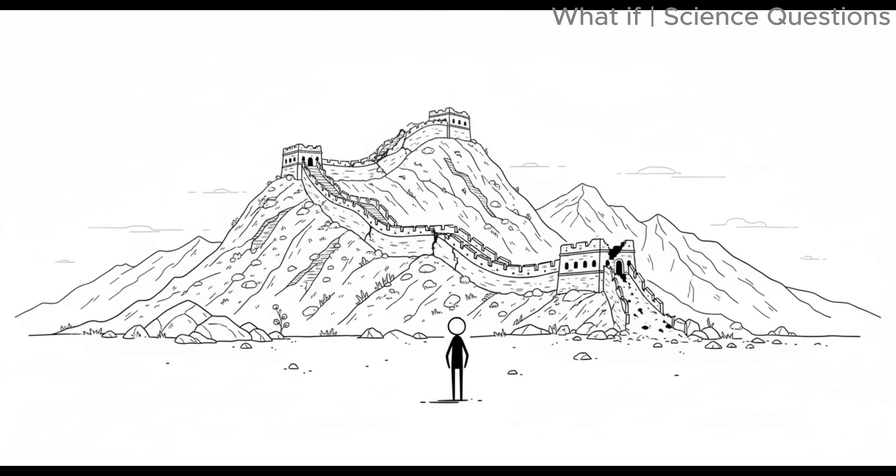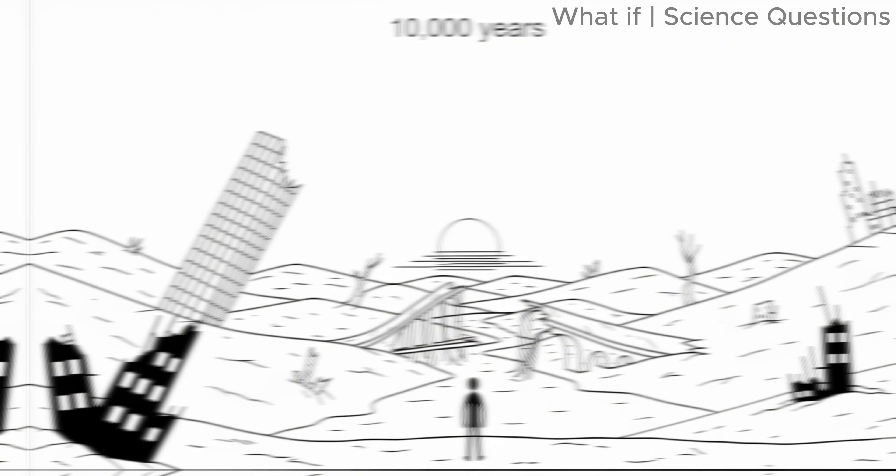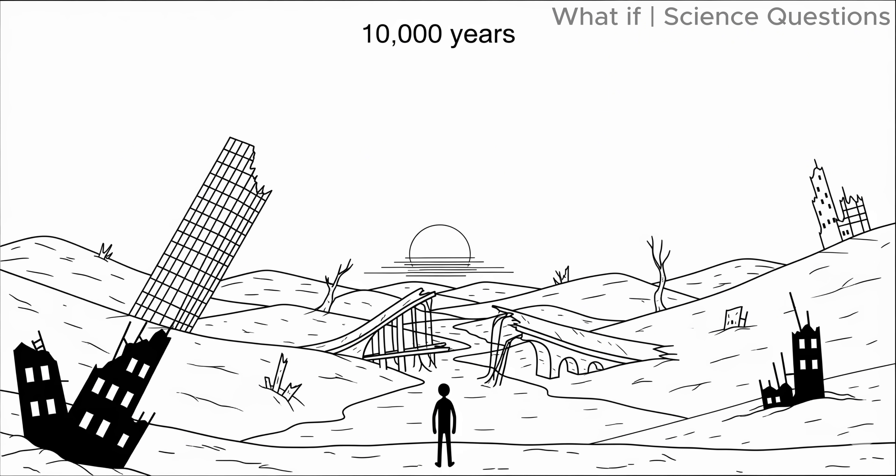The Great Wall of China, though weathered, might linger as broken ridges across mountains. Even so, erosion would eventually reduce them to dust. If you returned after 10,000 years, you might find a few recognizable shapes, but the vast majority of human structures would be gone.